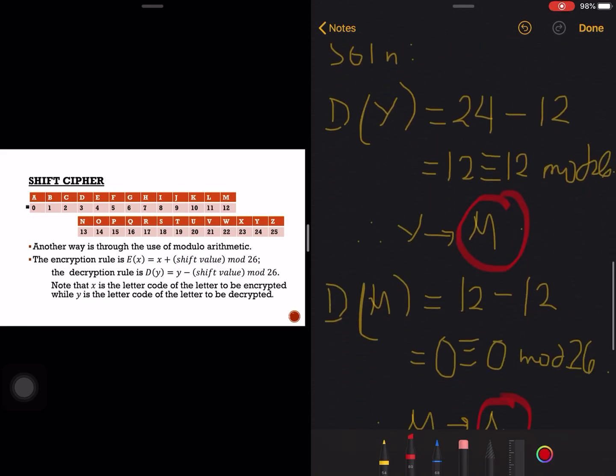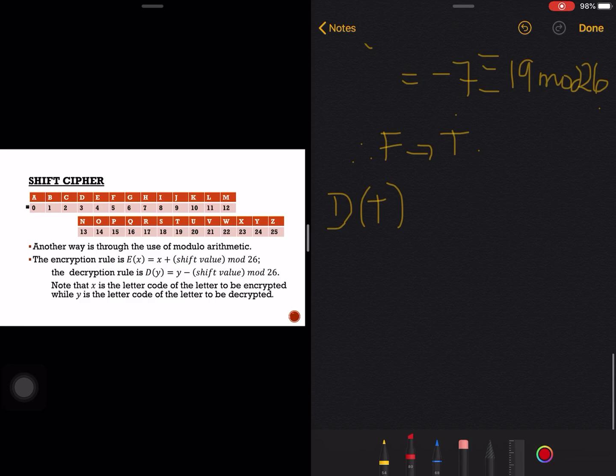And lastly T, this time. T's letter code is 19, minus 12 is 7, and 7 is still congruent to 7 mod 26, and that letter is H.